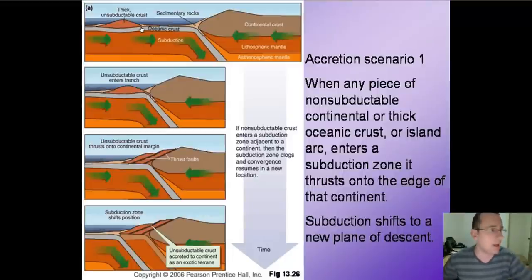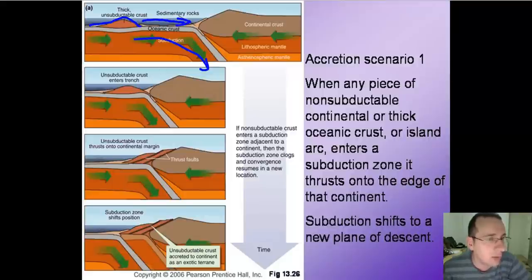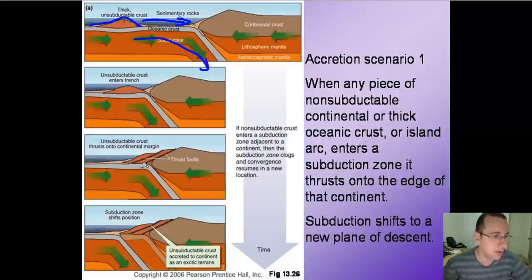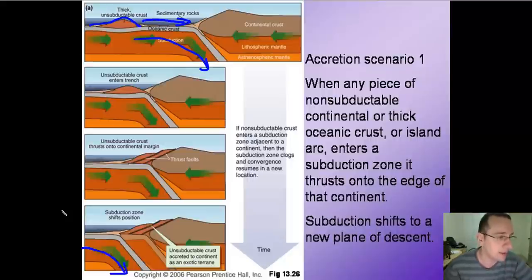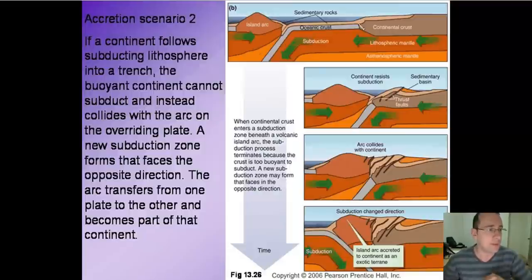Over time, as the continents hit things like island arcs — which are approaching the continents as the oceanic plate subducts — sometimes the oceanic plate will bring with it a volcanic mountain, an island arc, or something that formed on its surface. As this hits the continent, it will lock with the continent and not subduct underneath with the oceanic plate, because this is essentially unsubductable material. It's going to be pressed against the continent, forming a new thrust fault as this material is accreted against the continent, and then the subduction zone will shift from ahead of the seamount to behind it.